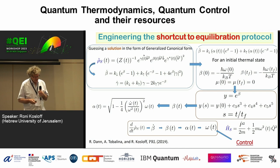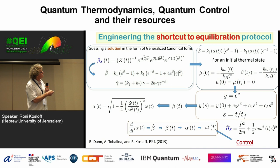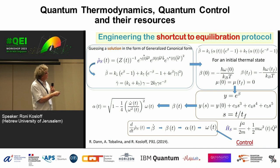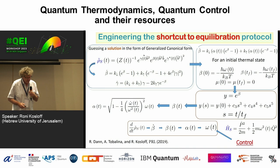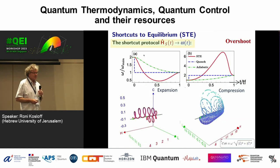This uses ideas from shortcuts to adiabaticity, but it's not adiabatic — it's thermal, we're in contact with a heat bath all the time. We write our density matrix in a specific form, get equations of motion for parameters, solve them, impose constraints, and eventually get the scheduling needed to perform the isothermal stroke.